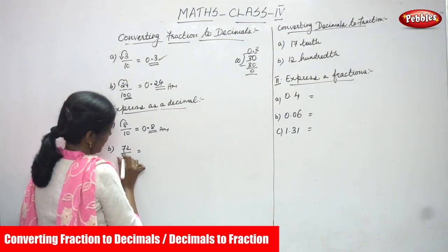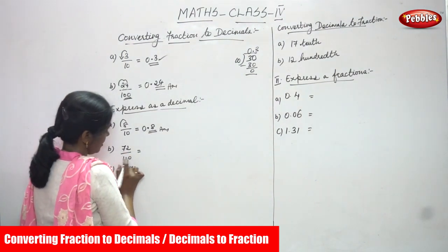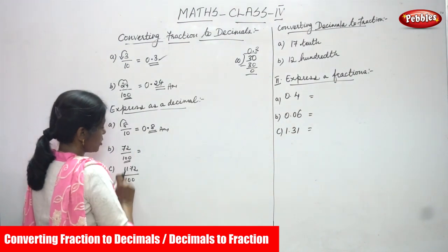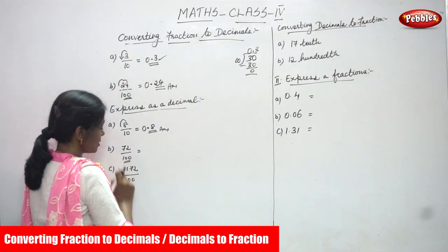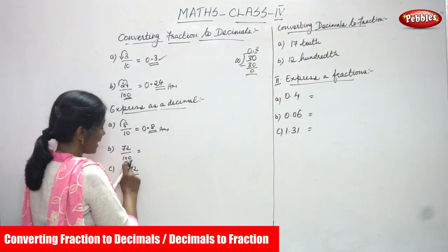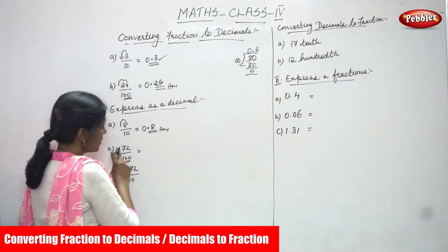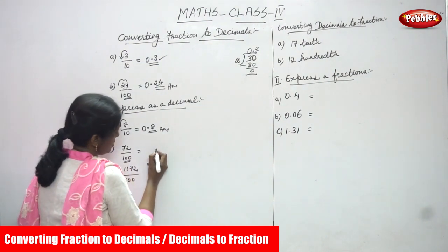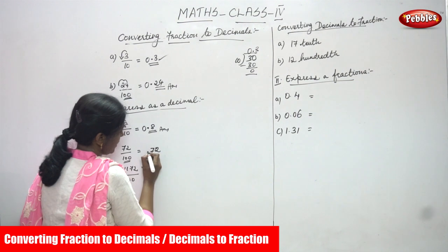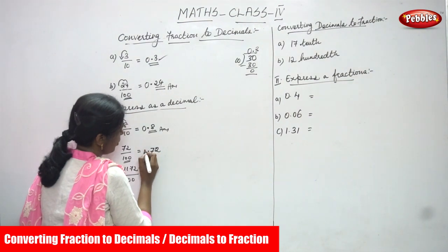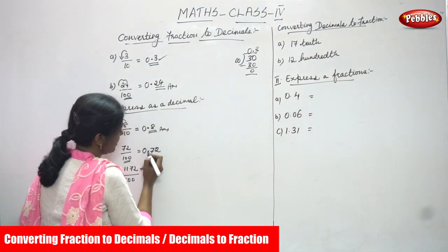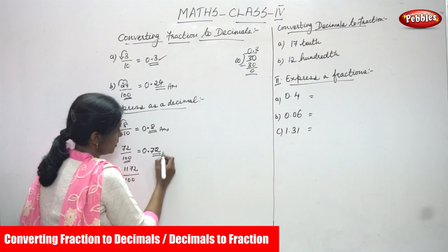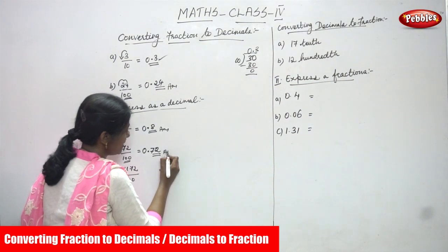Now 72 by 100. 72 is the numerator and 100 is the denominator. How many zeros in 100? Two zeros. So you have to move two digits. Put the point, and before the point add zero. The answer is 0.72.